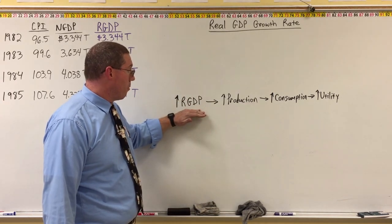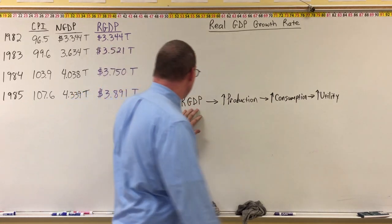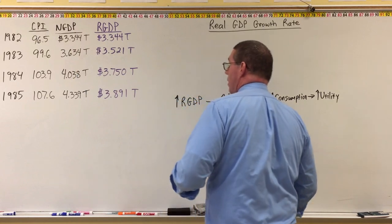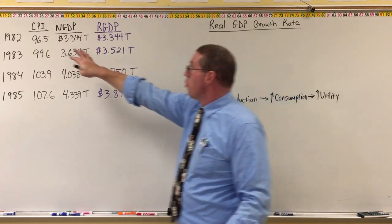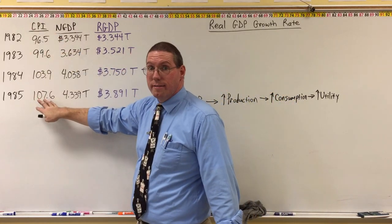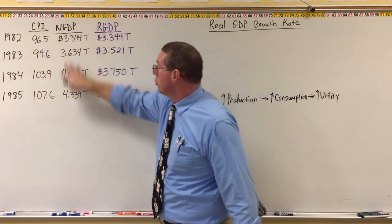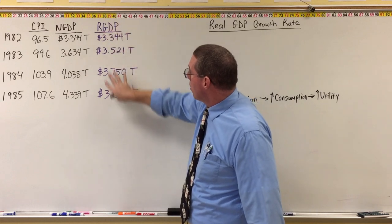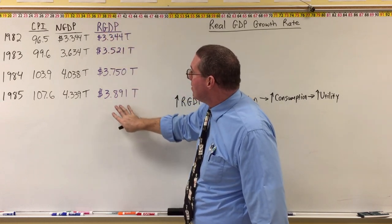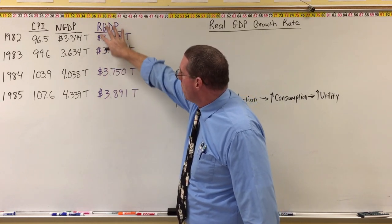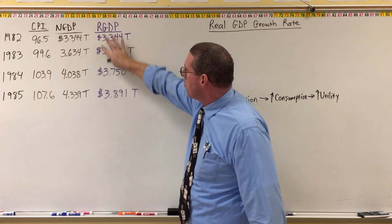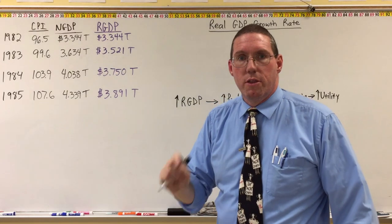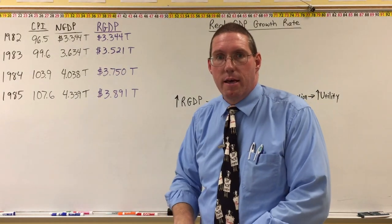But remember, we don't really measure the sale of the products in real GDP. We actually measure the sale of the products in nominal GDP. Then we take the price level, which we're already collecting data on, and we deflate the nominal GDP into real GDP. So right here, this is the meat. This is our number. Remember, this is what's helping us understand whether good things or not-so-good things are happening in the economy.